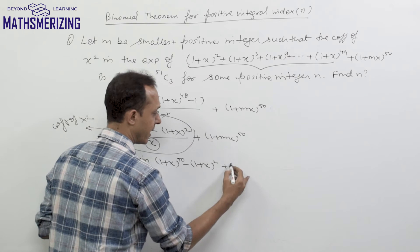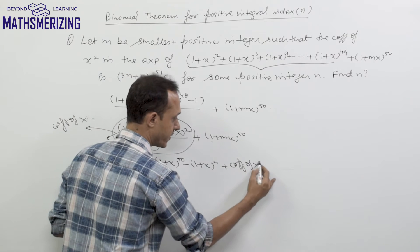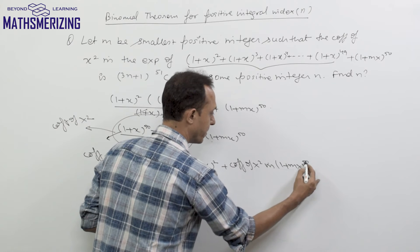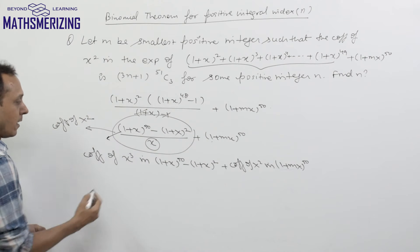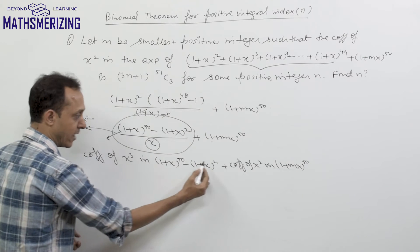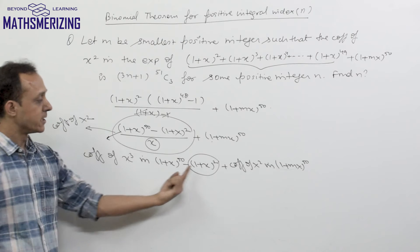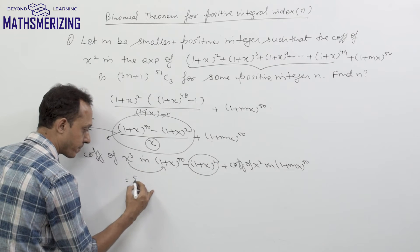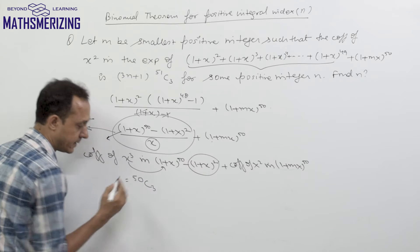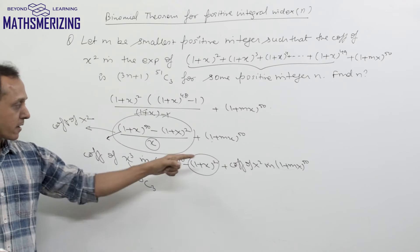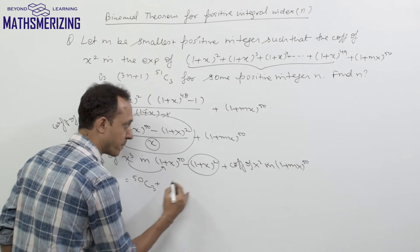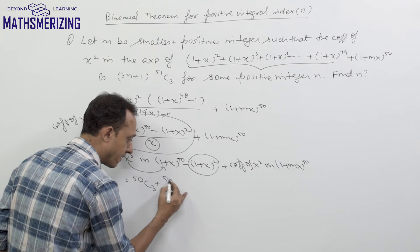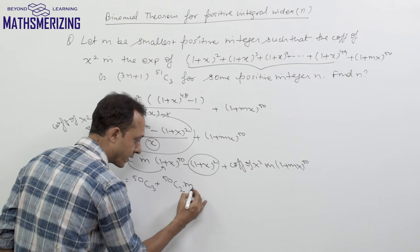From the second part, I just need to find the coefficient of x² in (1+mx)^50. Since I cannot get x³ from (1+x)², the coefficient of x³ from (1+x)^50 is simply ⁵⁰C₃. And the coefficient of x² from (1+mx)^50 is ⁵⁰C₂·m².